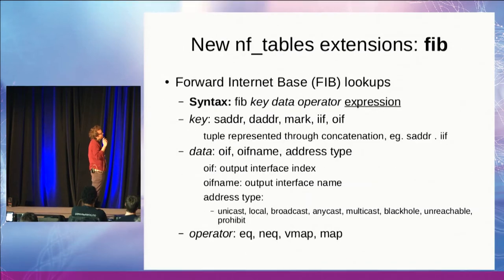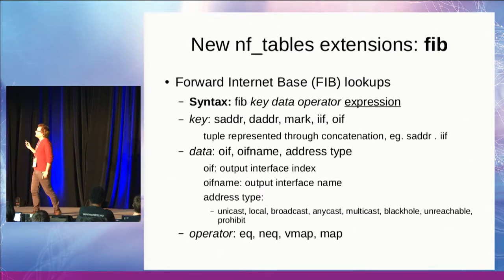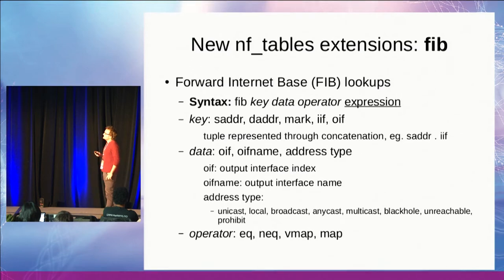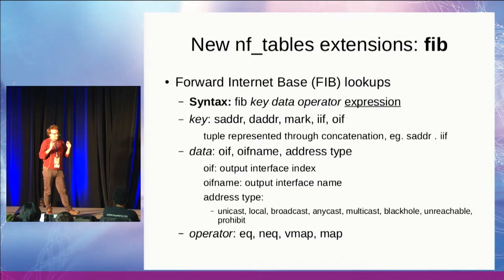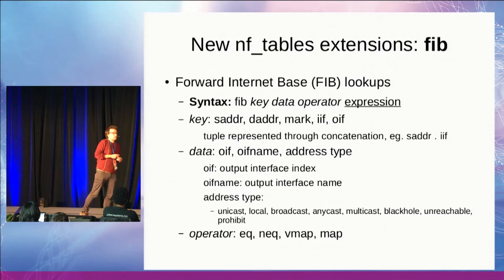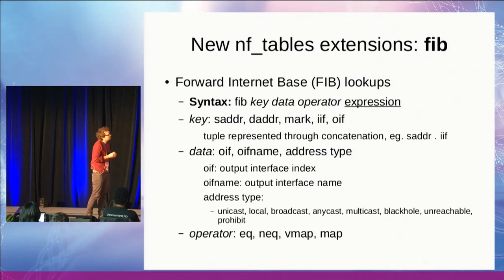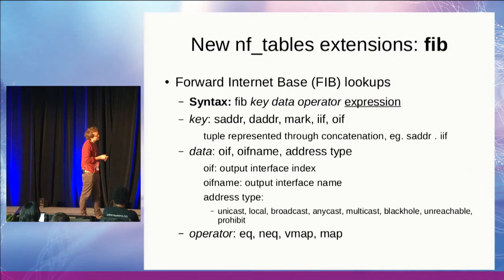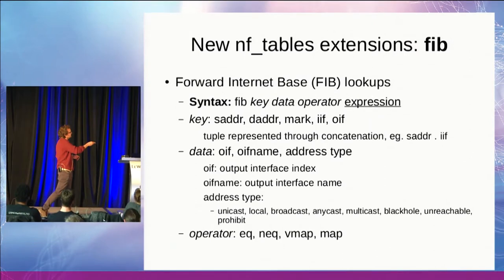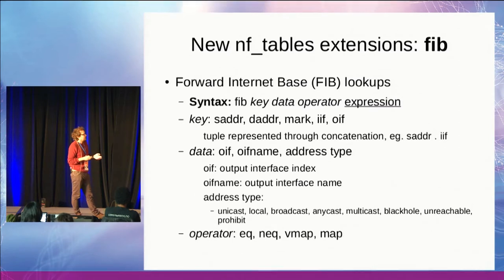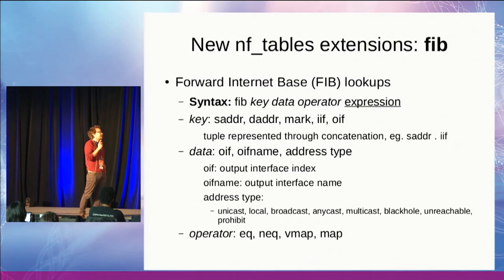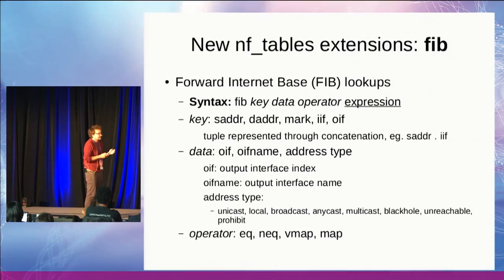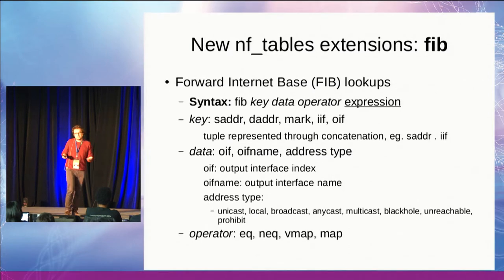One new expression is the FIB expression, which basically allows us to query the forwarding information base. It's something that Florian made — we've been discussing it for a while. In my opinion, it's a very cool feature that integrates well into what we have. All the routes you add through the netlink interface are already in the kernel, and all that database is available in the FIB, which we can use to perform queries. The syntax: you have FIB identifying the instruction, then a key. The possible keys are source address, destination address, mark, input interface, and output interface. The source address can be used for both IPv4 and IPv6 traffic.